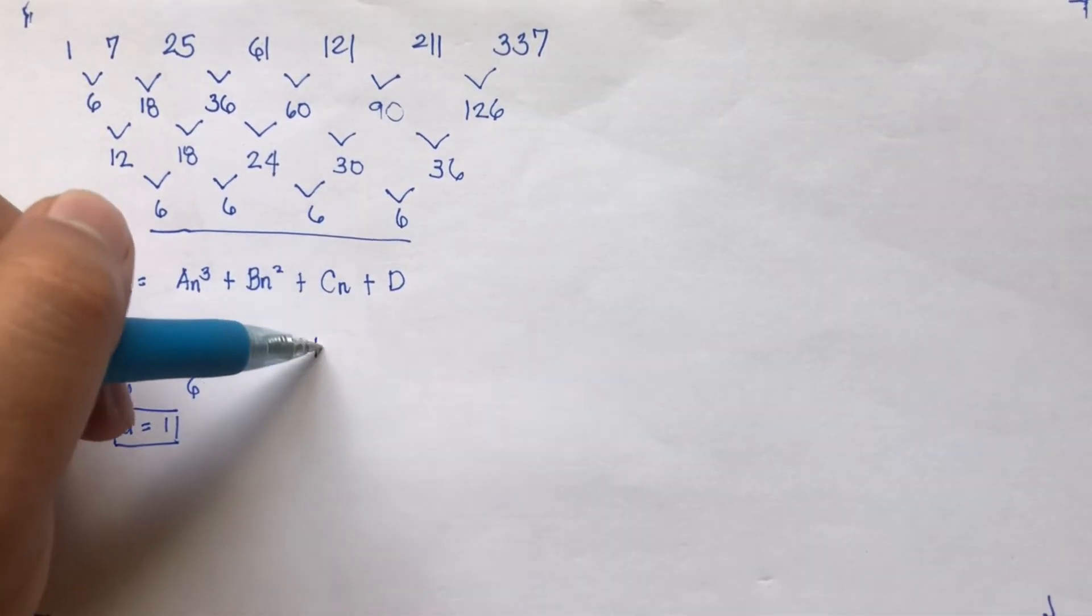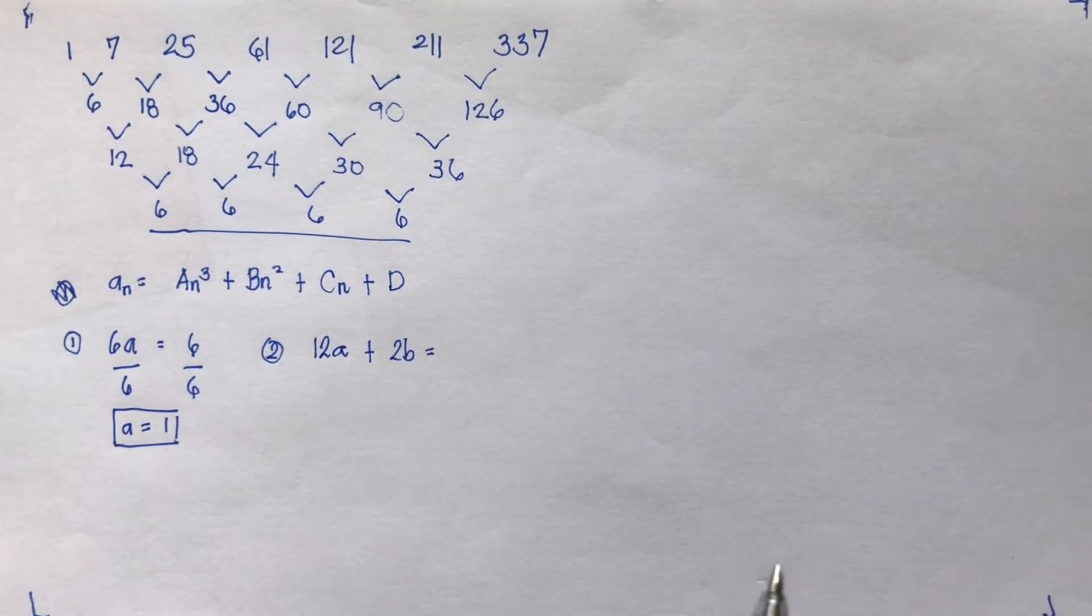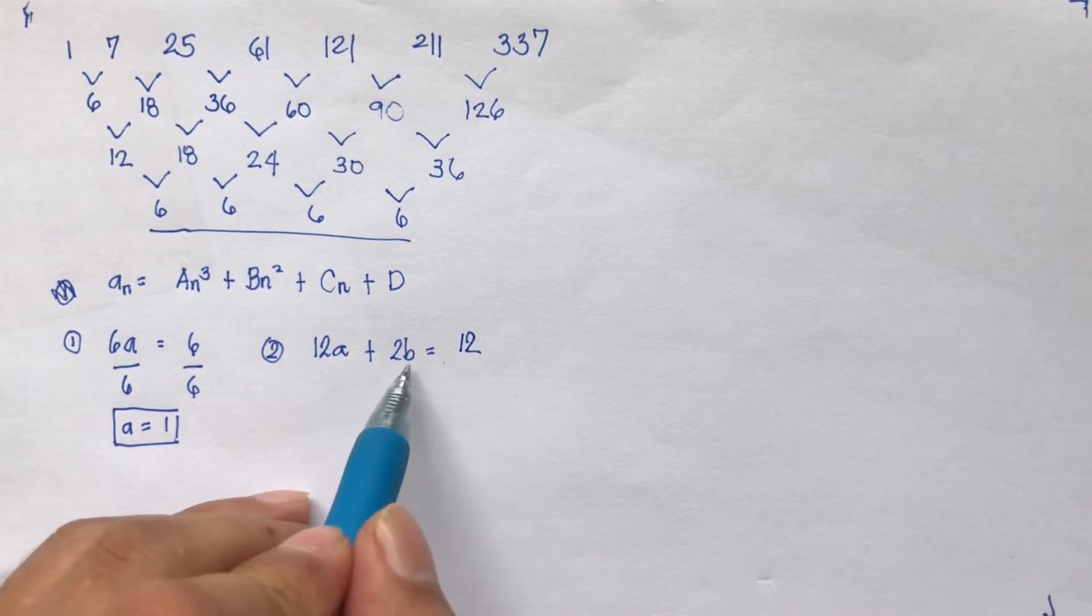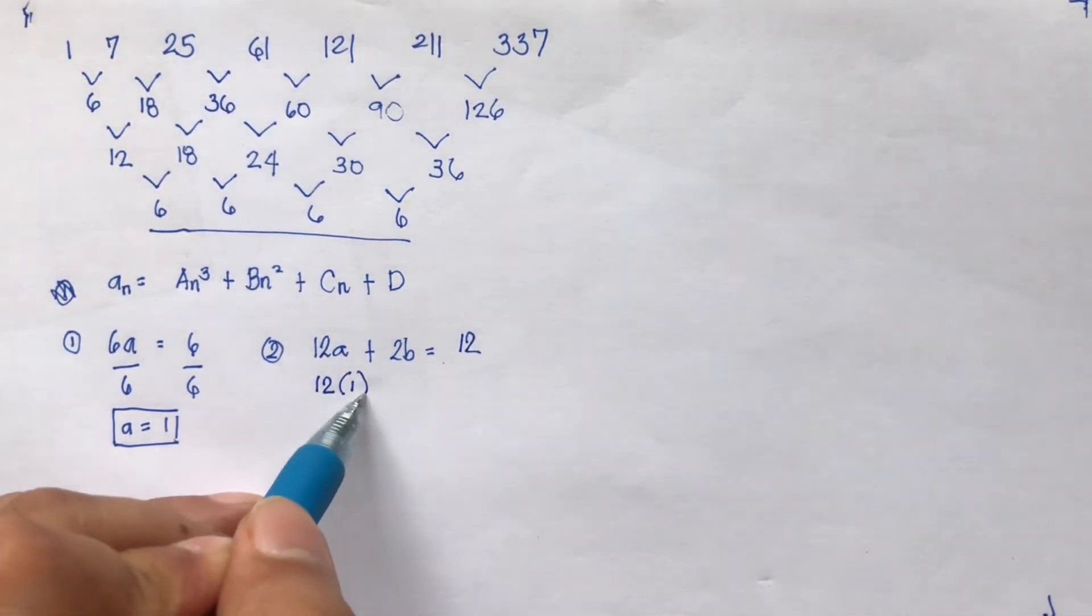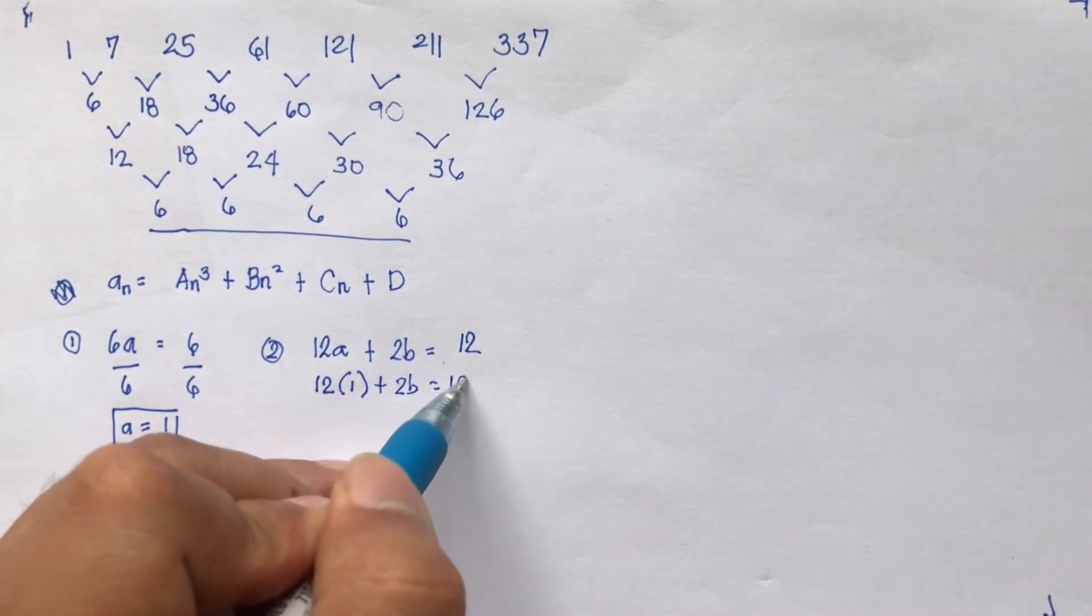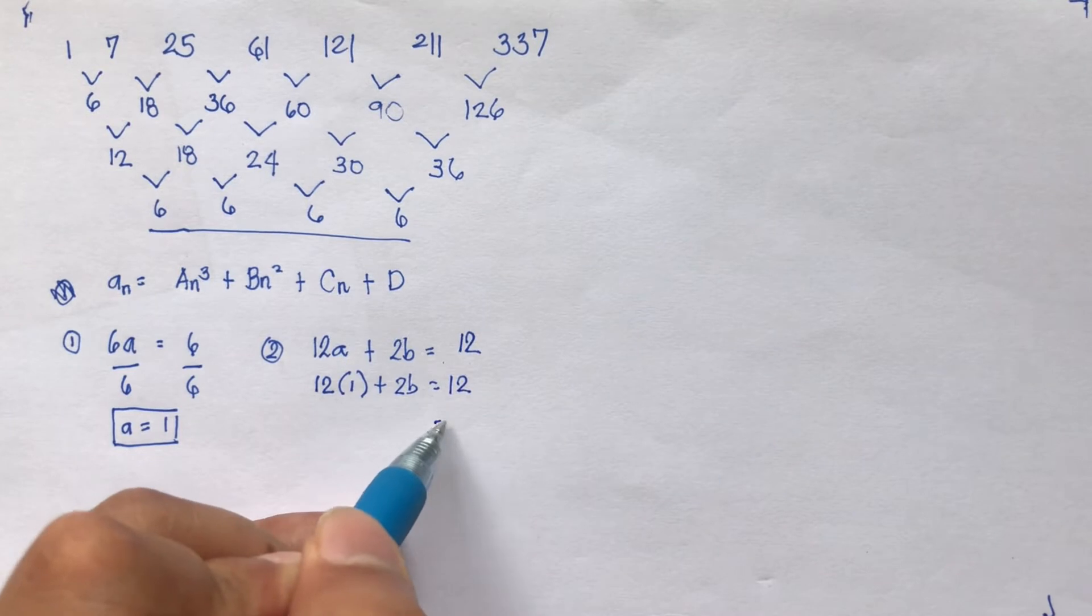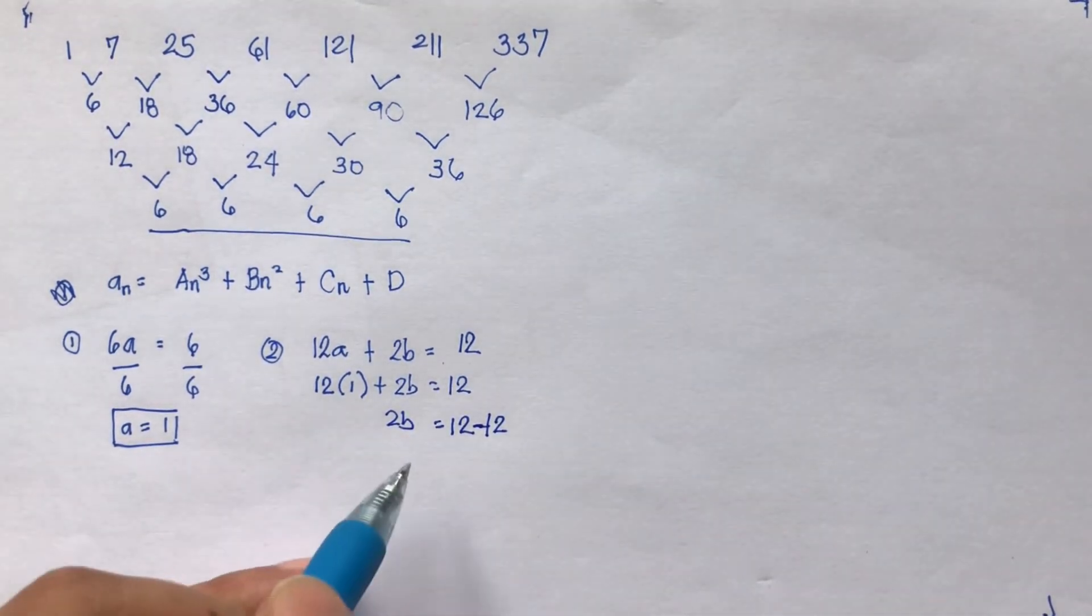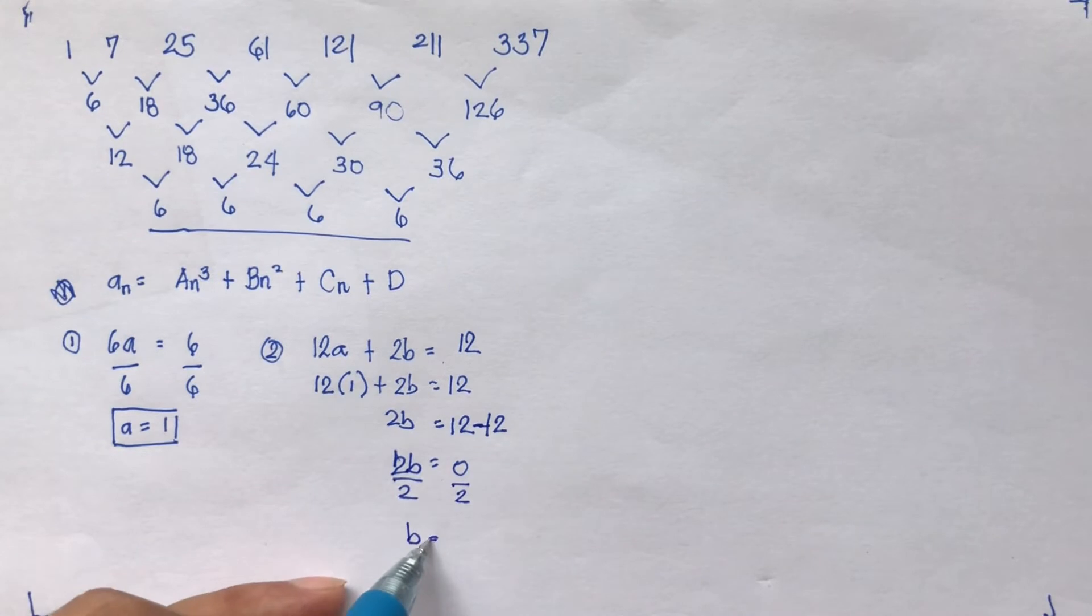So 12a plus 2b equals the first number in the second layer. 12a plus 2b is equal to 12. You will now solve for b using the value of a, which is 1, by substituting it here. So 12 times 1 plus 2b is equal to 12, which will be 12, so transpose that to the other side. 2b is equal to 12 minus 12, which is 0 equals 2b. Divide both sides by 2, b is equal to 0.